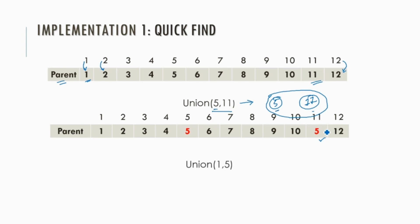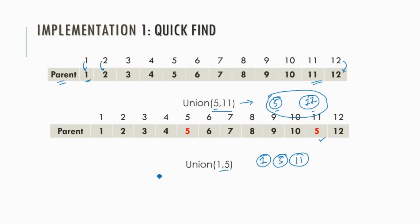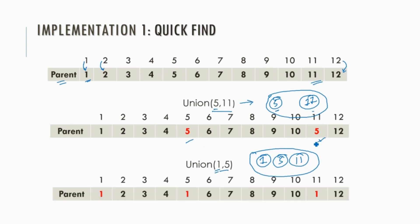Let's perform another union operation. When we merge 1 and 5, elements 1, 5, and 11 will all become members of the same set. We now need to change the representative of all three elements. We set 1 as the representative of all members of this set. So we change the representative of 5, and we must also change the representative of 11, since 11 was already in 5's set.